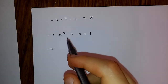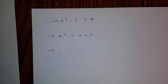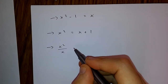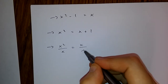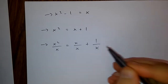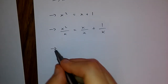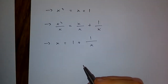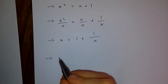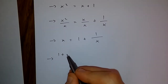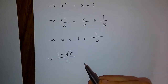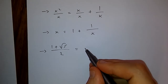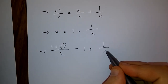And if we divide each element of this expression by x, we get x squared over x is equal to x over x plus 1 over x. And this means that x is equal to 1 plus 1 over x. Now since x is equal to 1 plus root 5 over 2, it means that 1 plus root 5 over 2 is equal to 1 plus 1 over x.